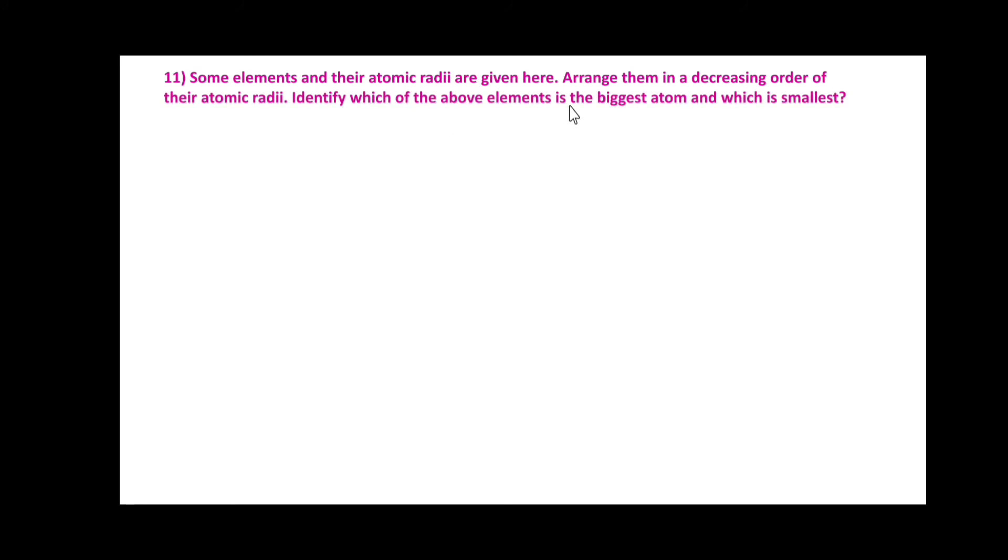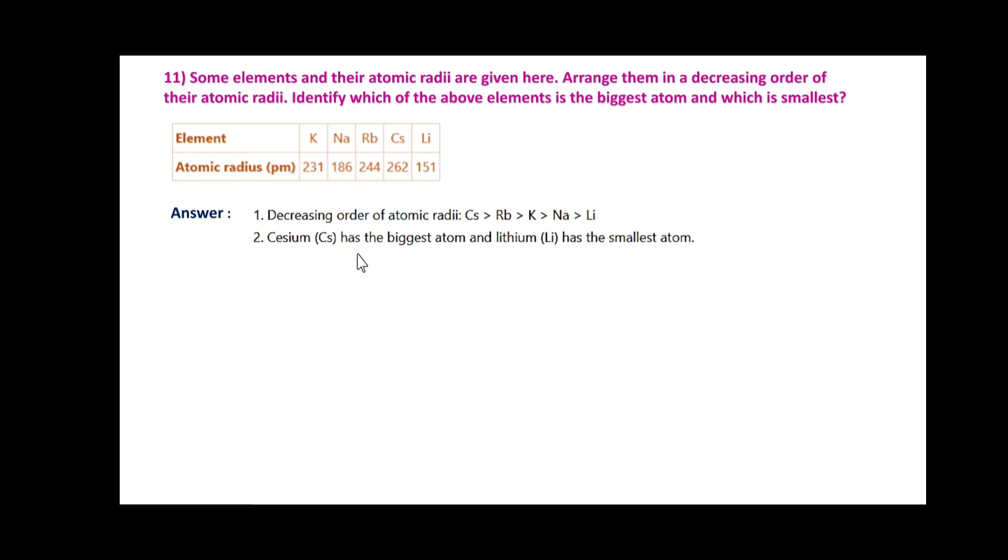Some elements and their atomic radii are given: K 231, Ne 186, Rb 244, Cs 262, Li 151. Arrange them in decreasing order of their atomic radii. Decreasing order: Cs > Rb > K > Ne > Li. Cesium has the biggest atom and lithium has the smallest atom.